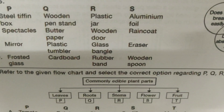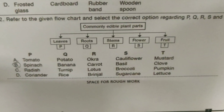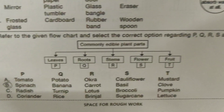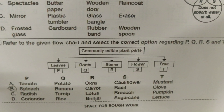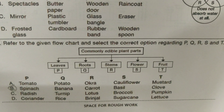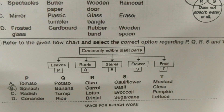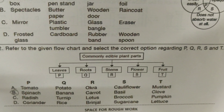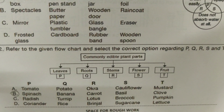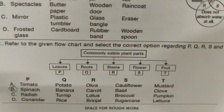Refer to the given flowchart and select the correct option regarding P, Q, R, S, and T. P is spinach, Q is banana, R is carrot, S is basil, and T is clove.